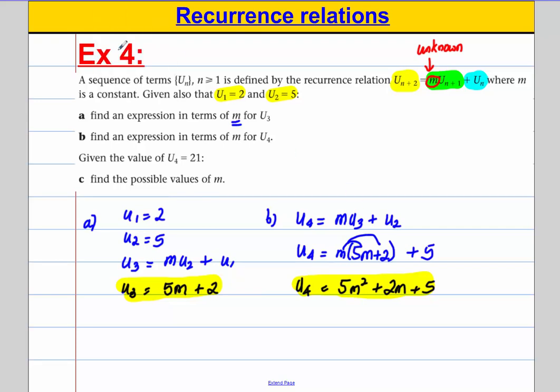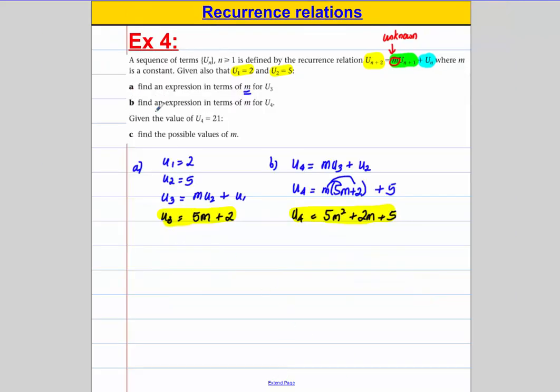Now, there is a next part to it. It says, given that u4 actually has the value 21, find the possible values of m. We have an expression for u4 here and we are told it's equal to 21. So for part c, we're going to solve 5m squared, add 2m, add 5 is equal to 21.